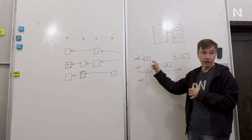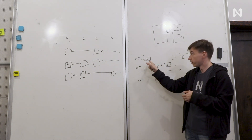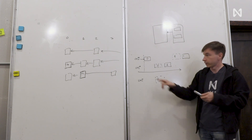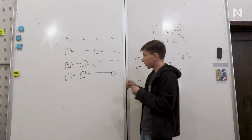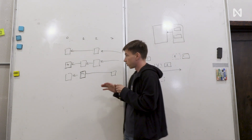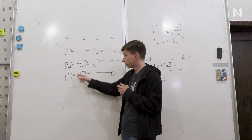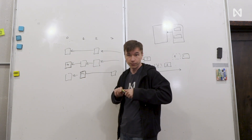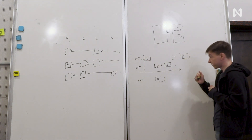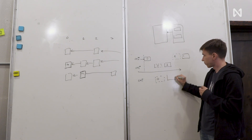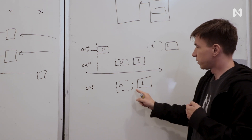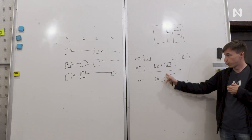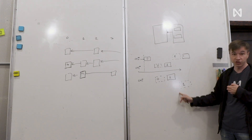If we went with the approach where the chunk is fully applied before it is sent, that problem would be solved — the chunk producer would know the receipts and could include them in the message to the other shard. But that becomes significantly slower. So instead: we definitely cannot know the receipts by the time we're creating the chunk. But we don't need to know the receipts by the time we're creating the chunk — we need to know them by the time we're executing it. Does that make sense?